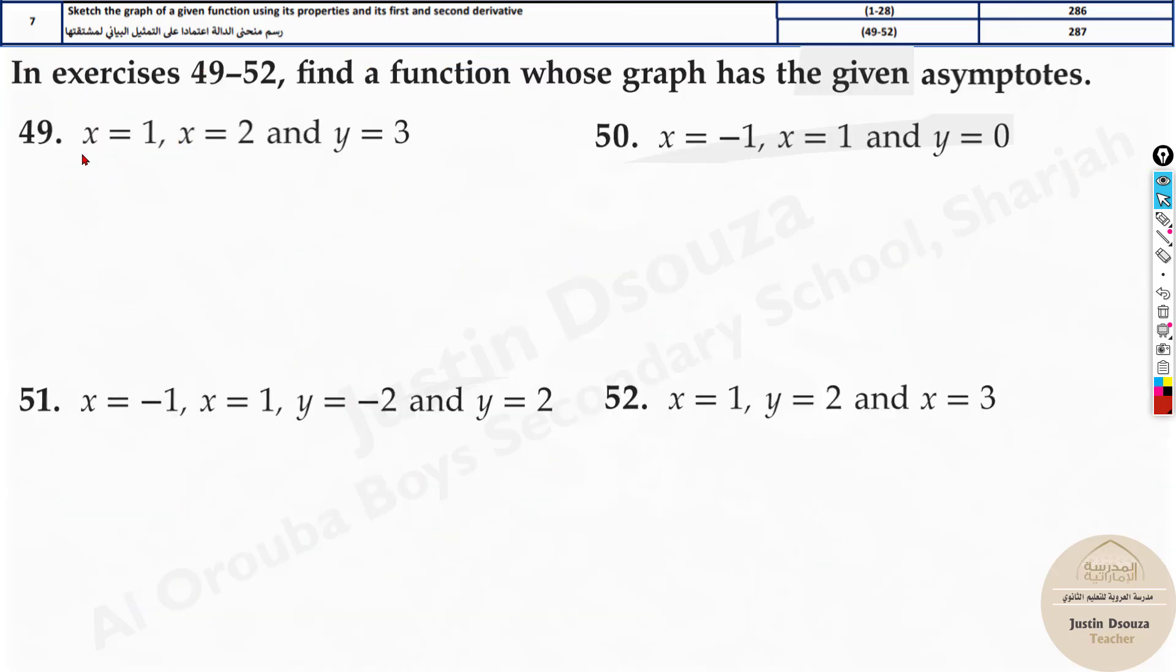In the question number seven there is another different type of topic which is from 49 to 52. Here they have given you the asymptotes and then asked you to give a possible graph.